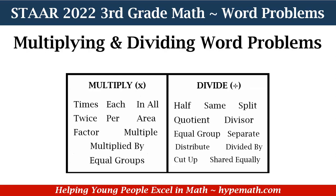For multiplication and division — starting with multiplication — the keywords are: times, each, all, twice, per, area, factor, multiple, multiplied by, and equal groups.